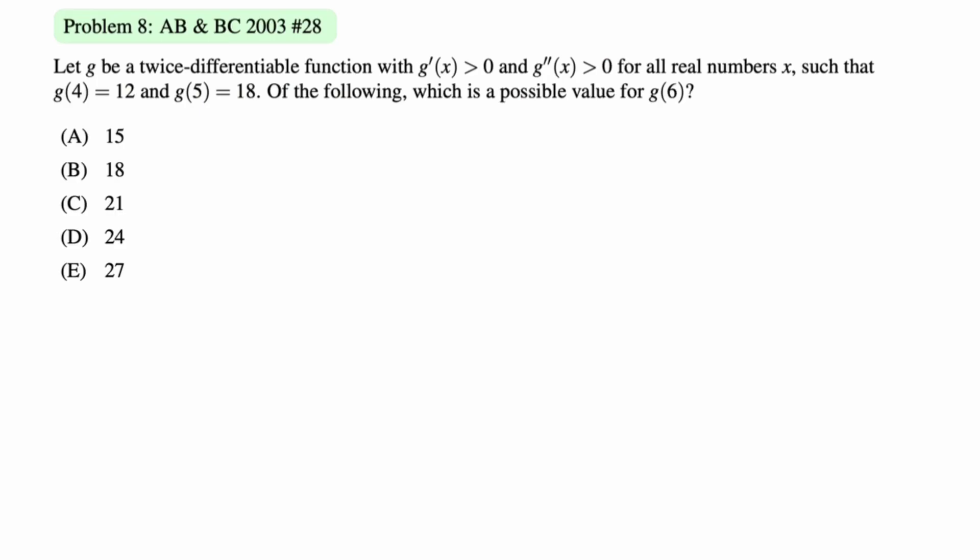Let g be a twice differentiable function. g prime is greater than 0. g double prime is greater than 0. So this is increasing and concave up. So I think it's a good idea to just draw something that's increasing concave up. So you should have in your mind a picture of increasing concave up, increasing concave down, increasing no concavity. That's always linear. And then the decreasing equivalence. And then also a horizontal line. Just always be thinking which of these should I draw to fit the situation? In this case, we know that we are increasing concave up. So we have this.